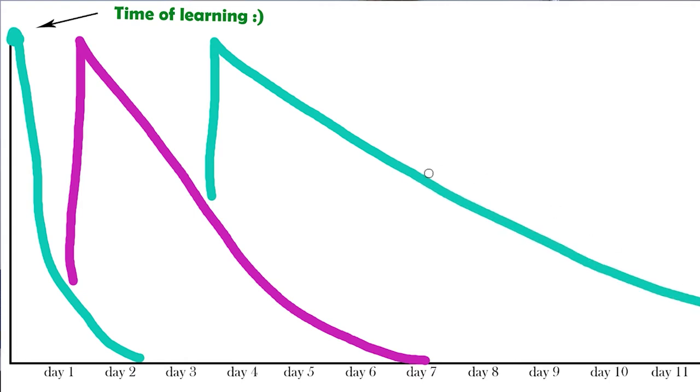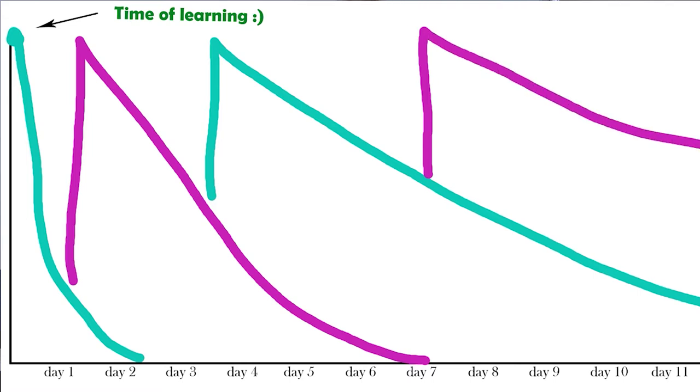And then that way it might not decline for say 14 days, so you'd relearn it a week later and it would reset and continue to decline ever so slowly, and so on. And you get the picture.